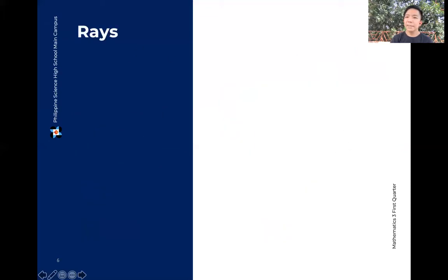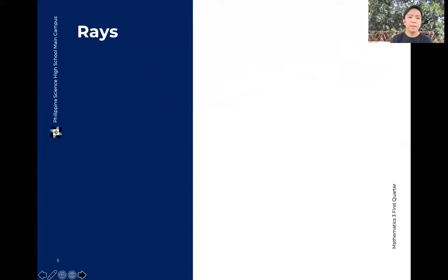Next, rays naman. We can imagine this as siguro parang kalahati ng isang linya. Pero hindi yun precise na definition. It's a geometric figure na parang line. Pero may terminator, may point kung saan siya natatapos. Pero yung kabilang side nung line natin, nung ray, it goes on and on. So we also have an arrowhead to represent na hindi siya nage-end in this side of our ray. Yung endpoint, yung point na kinaduduluhan ng vertex natin. Tinatawag natin siya formally as a vertex.